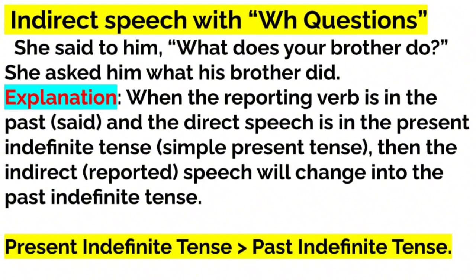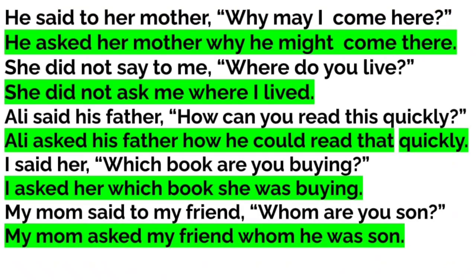Explanation: when the reporting verb is in the past and the direct speech is in the present definite tense, then the indirect speech will change into past definite tense. 'He said to her mother, why may I come here?' becomes 'He asked her mother why he might come there.' 'She did not say to me, where do you live?' becomes 'She did not ask me where I lived.'